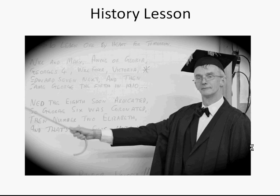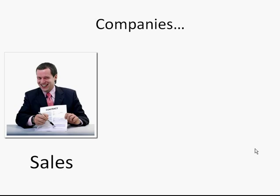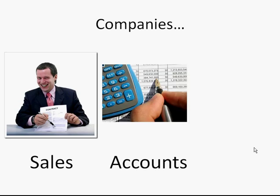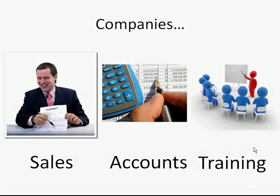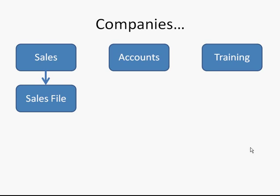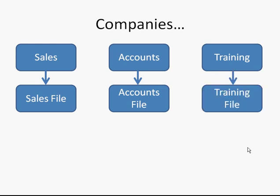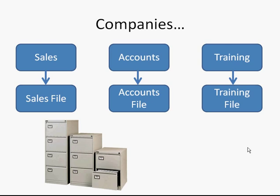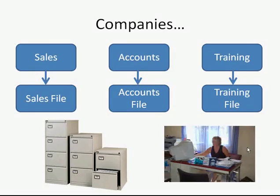First, a bit of a history lesson. In bygone years, companies might have departments such as sales, which would go out and try to sell the company's product to customers; an accounts department, which would try to get money from those customers; and a training department that would train customers on the products sold. Each department would store its own data — in paper records in a filing cabinet or in an electronic database on a computer.